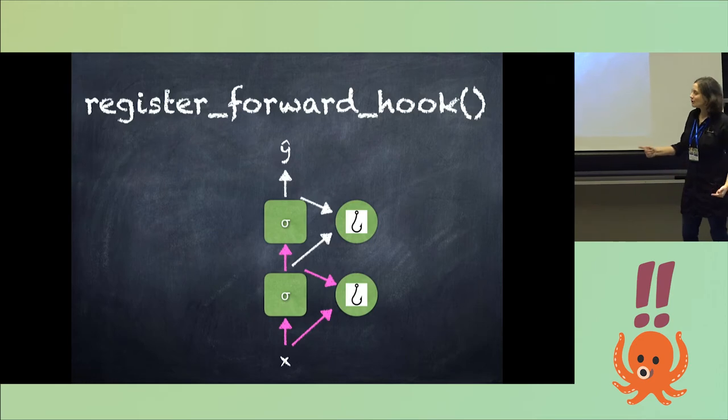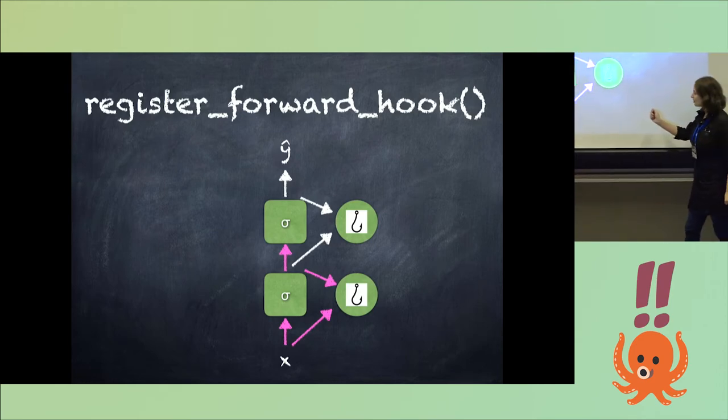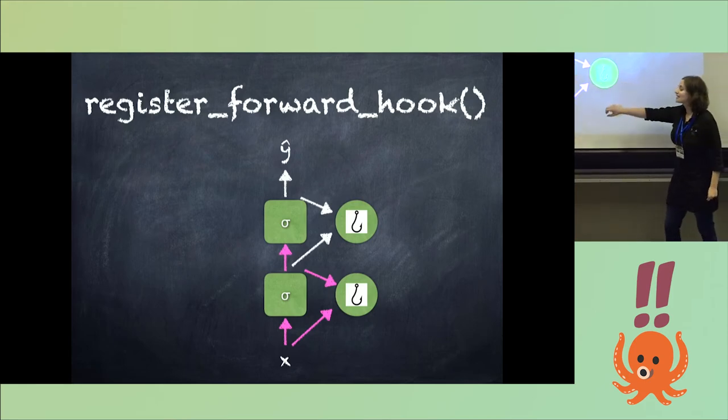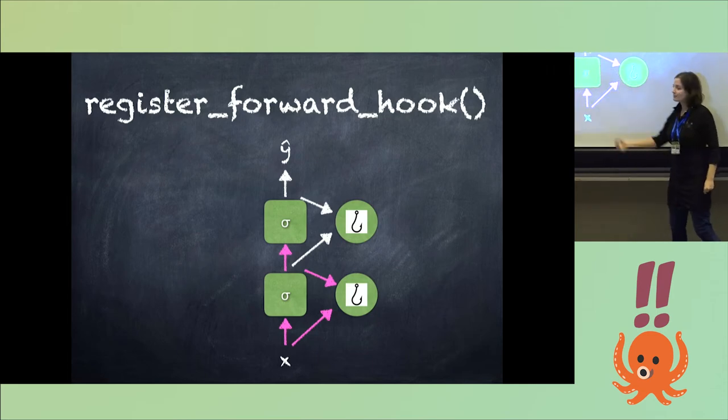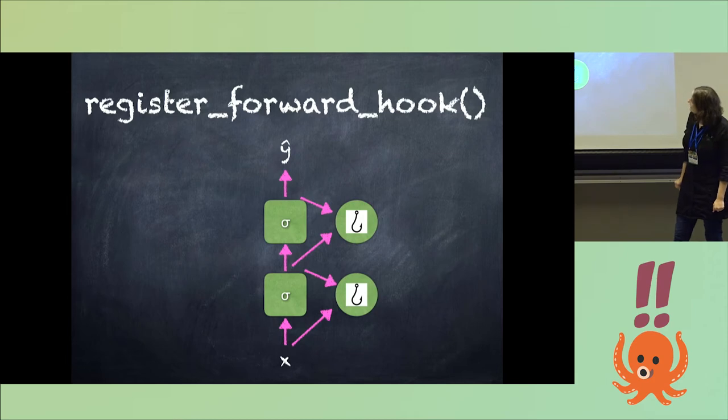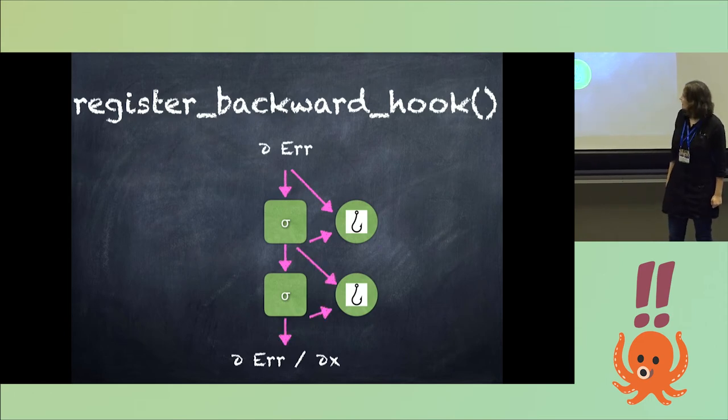So what happens with a hook is it's a function that you associate with a particular module so that when the actual function of that module gets run, it simultaneously passes its inputs and outputs to the hook. So this is what would happen during a forward pass with a forward hook. And this is what would happen during a backward pass with a backward hook.